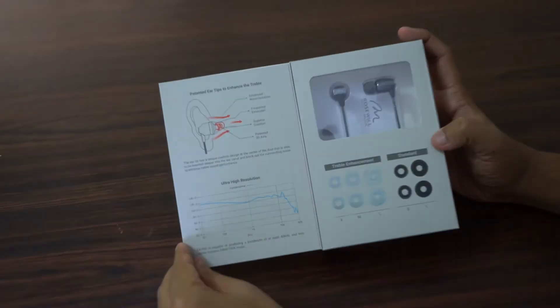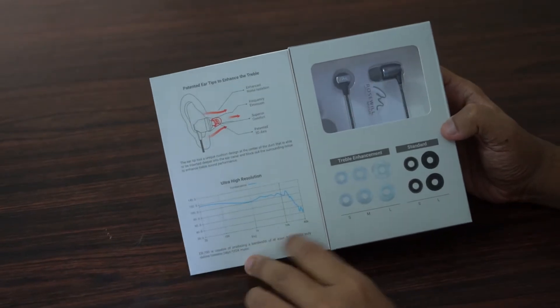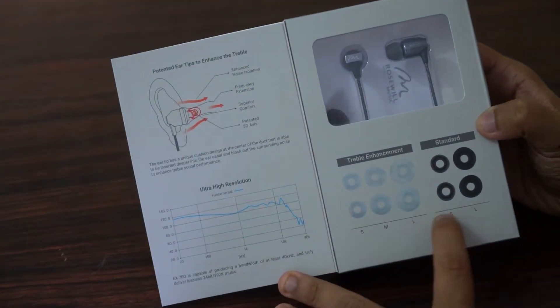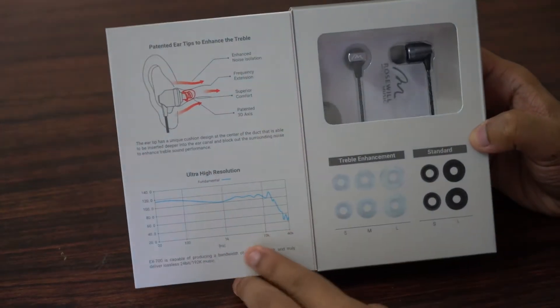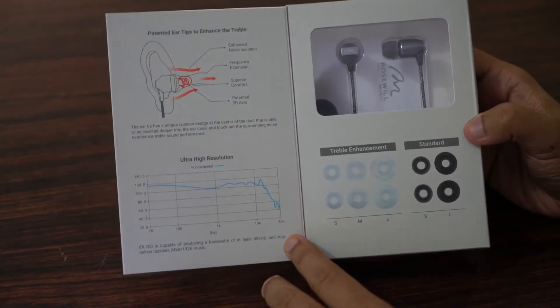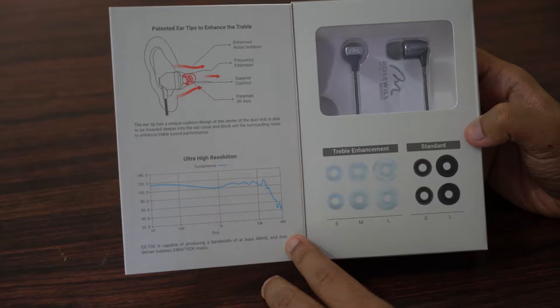Opening up the cover, you can see that the box includes treble enhancement earbuds and standard earbuds. And on the left is a graph of the fundamental of the ultra high resolution with the picture of how the ear tips help in enhancing the treble.